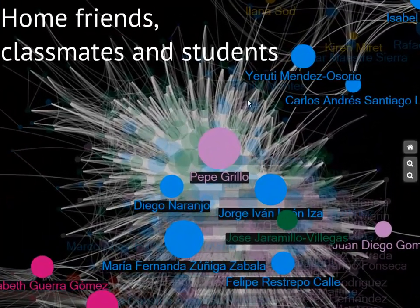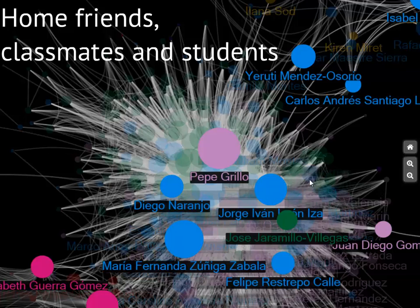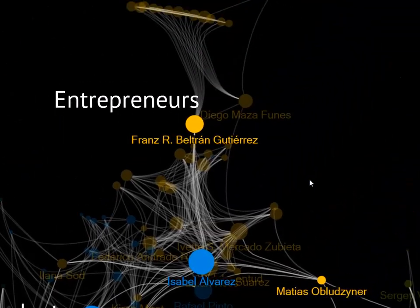The first thing you notice is this group here — it includes all the friends, classmates, students, and co-workers I had when I was in Colombia. Maria Fernanda, my wife, is the biggest circle in the whole network because she's the most highly connected person. You can also identify Felipe, my co-founder, as well as Jose Jaramillo and other important friends because of their connections.